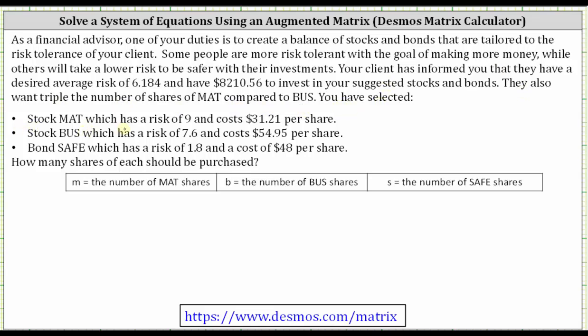You have selected stock MAT, which has a risk of 9 and costs $31.21 per share; stock BUS, which has a risk of 7.6 and costs $54.95 per share; and bond SAFE, which has a risk of 1.8 and a cost of $48 per share. How many shares of each should be purchased?